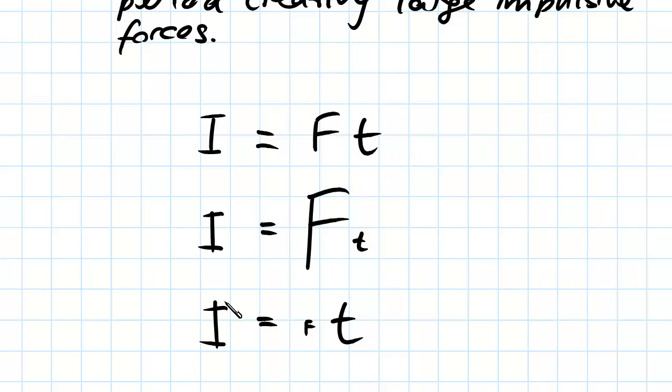In this one we have a medium-sized force and a medium length of time. In this second example we have a very large force in a very small time. And in this third one we have a very small force and a large time, and each of these impulses are equal.